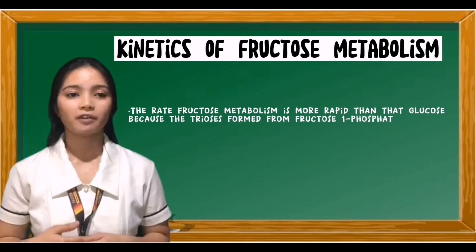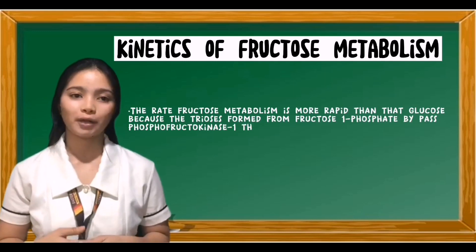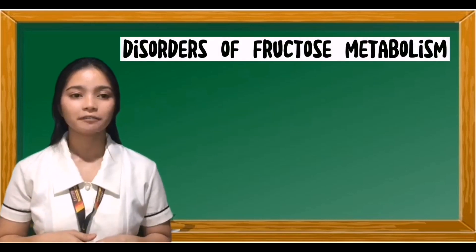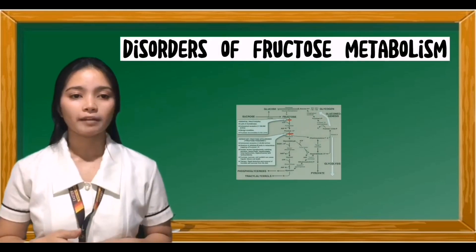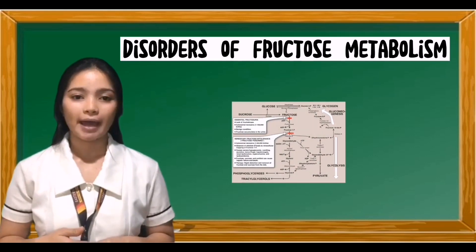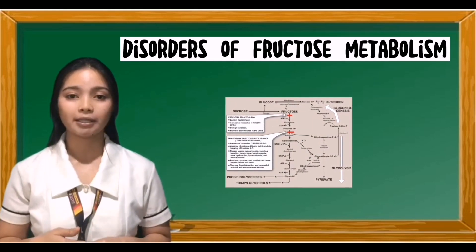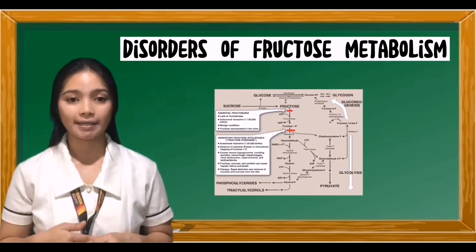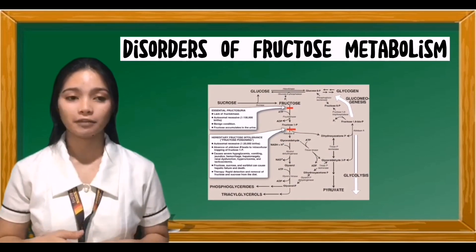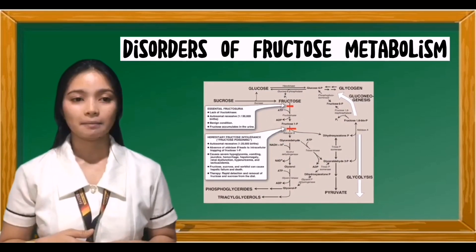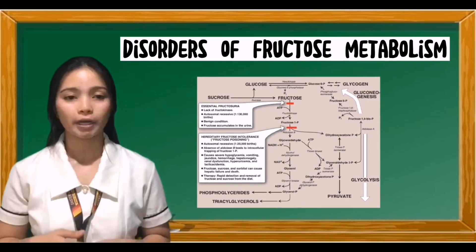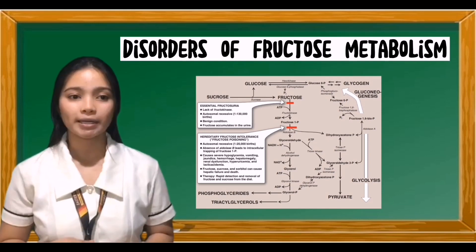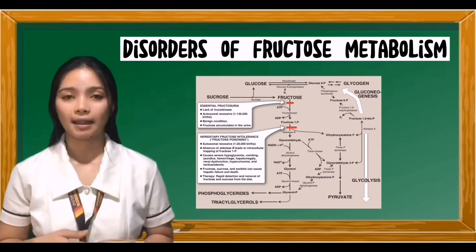The rate of fructose metabolism is more rapid than that of glucose because the trioses formed from fructose 1-phosphate bypass phosphofructokinase-1, the major rate-limiting step in glycolysis. Regarding disorders of fructose metabolism: a deficiency of one of the key enzymes required for the entry of fructose into intermediary metabolic pathways can result in either a benign condition as a result of fructokinase deficiency, or severe disturbance of liver and kidney metabolism as a result of aldolase B deficiency, or hereditary fructose intolerance (HFI), which is estimated at 1 in 20,000 live births.